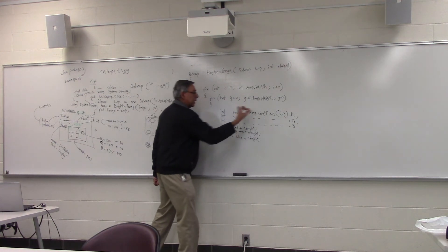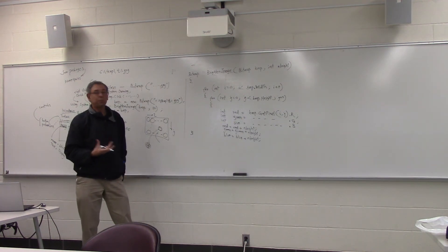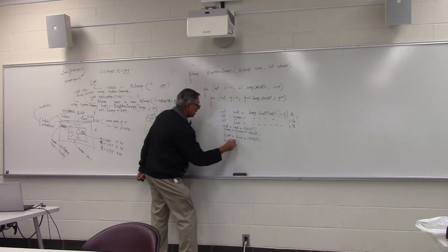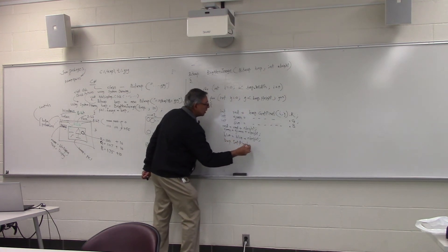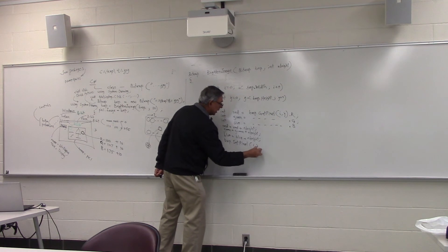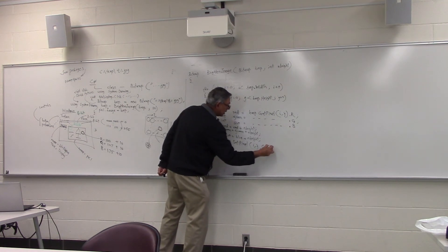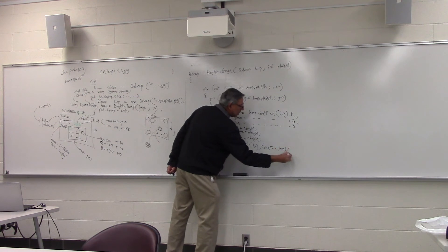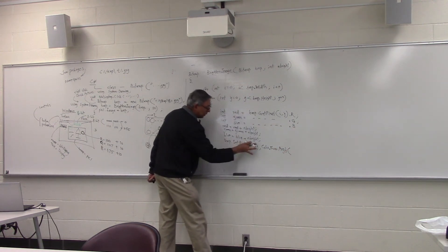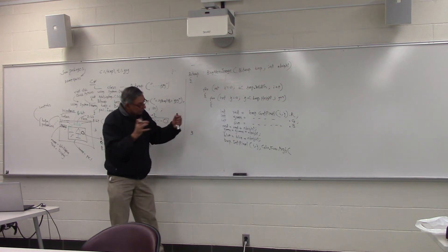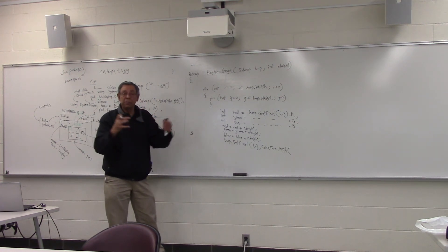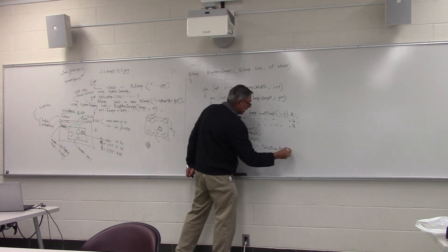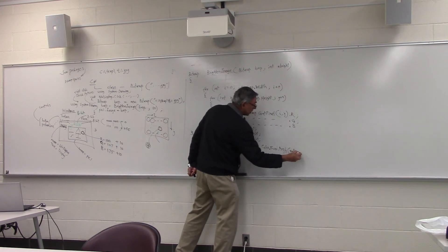Just like get pixel gives us the pixel, the set pixel will put it back. Now you will say bmp dot set pixel i comma j and color dot from ARGB. If I remember correctly, color is another function. Because once we put it back, we have to put it together. Not RGB individually, but pack it together and put it in the pixel. This from ARGB basically gives us that capability. So red, green, blue.